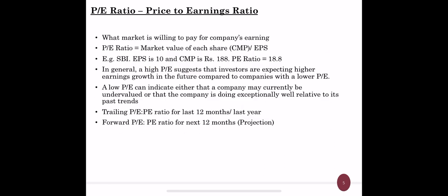Now we'll see the price to earnings ratio — another important fundamental analysis tool used to identify whether a stock is overvalued or undervalued. The PE ratio is the market value of each share, that is the current market price (CMP), divided by EPS. It represents what the market is willing to pay for the company's earnings — relating current market price to the company's earnings.